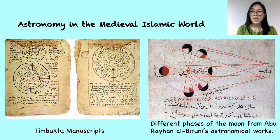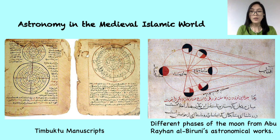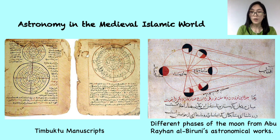The Arabs adopted the Indian system of numbers and introduced them on a larger scale, to the extent that warehouse clerks and traders started using these numerals to conduct their business. The Arabs translated Indian works on algebra and trigonometry, and they applied them to solve many physical and practical problems.